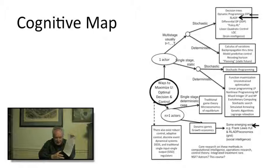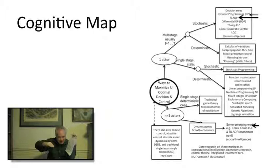Today I'm going to be focusing again on the upper right-hand box of this cognitive map — the methods which are important for solving optimization or decision or control problems when there are many stages, like many time periods, and where there is uncertainty or noise. This is the general case.